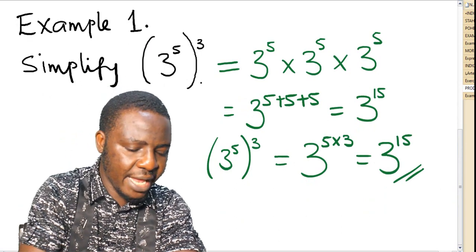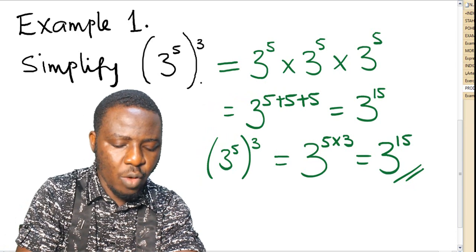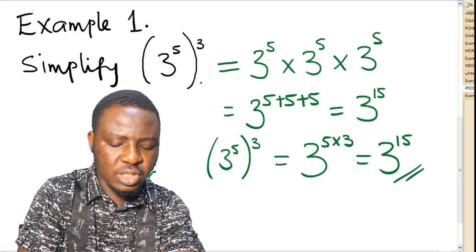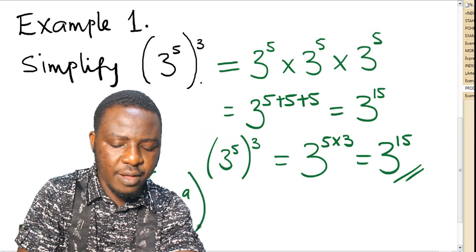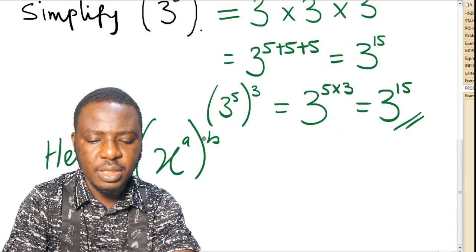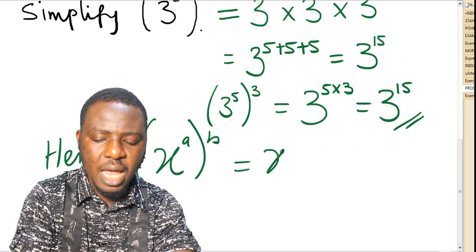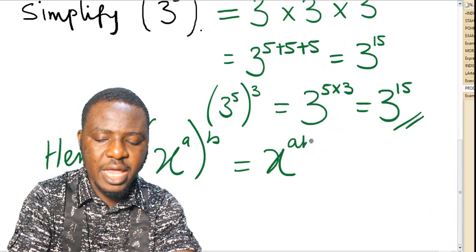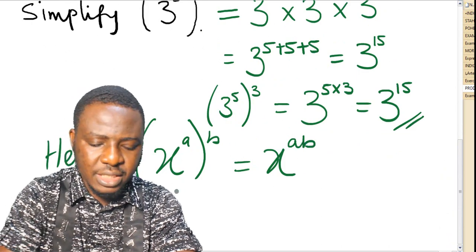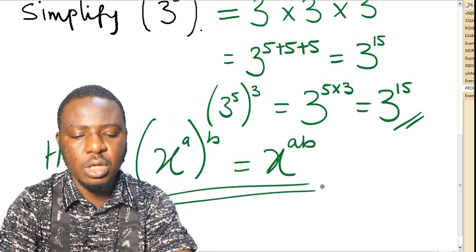Therefore, when you have x raised to the power of a, all raised to the power of b, it is equal to x raised to the power of a times b, which is ab. This is what we refer to as the product law.